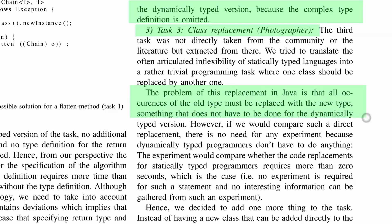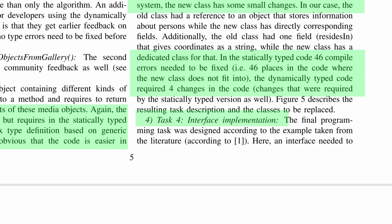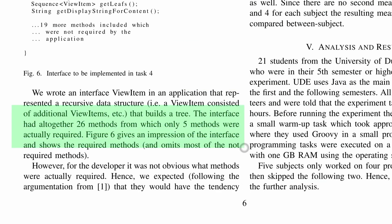The third task was to replace a class — we want to replace all occurrences of an old type with a new type. But in the dynamically typed language, you don't even need to do this because the types are not checked. To make it meaningful, they introduced some small changes in the new class, which introduced about 46 compile errors that needed to be fixed in the static version of the code, and four changes in the dynamically typed version. The fourth and last task was to implement an interface. The interface was pretty big — it had 26 methods in it, but only five were actually required by the rest of the code, and the developer did not know upfront what those five methods were.